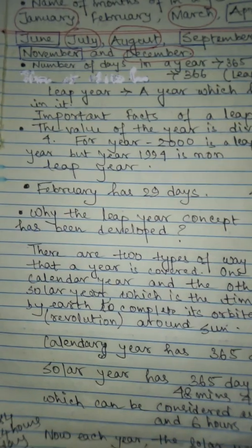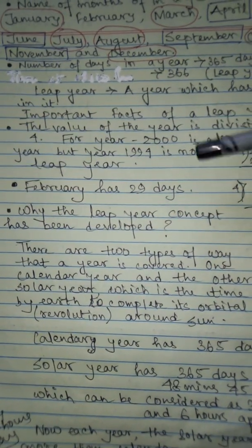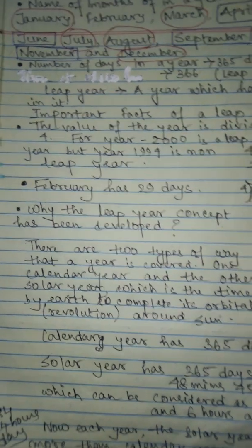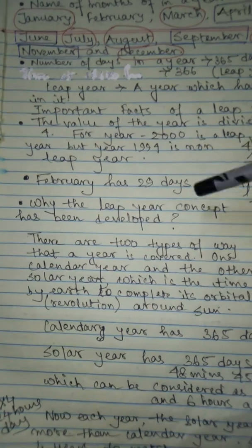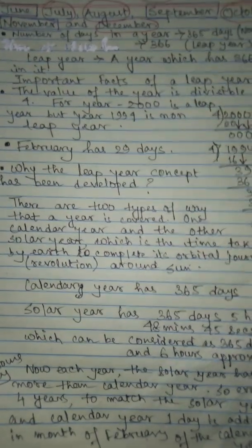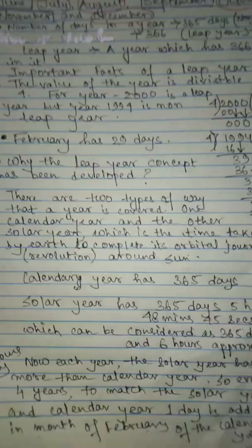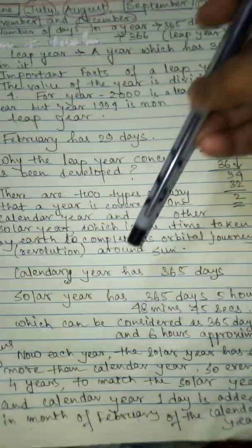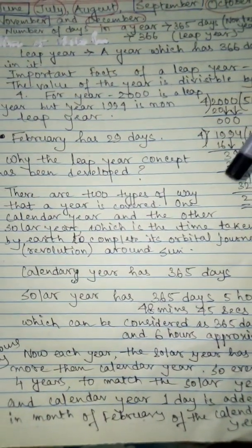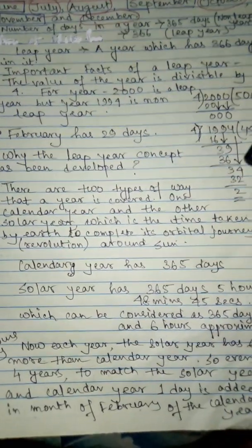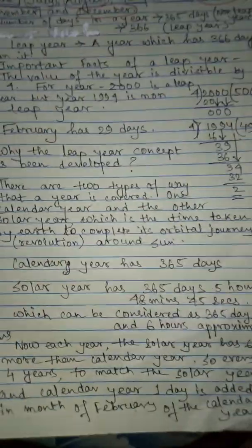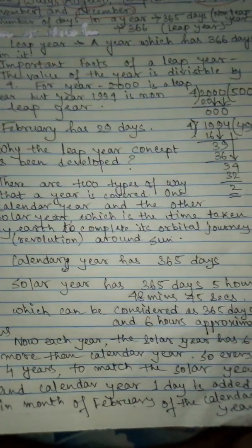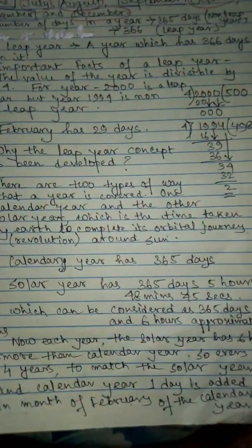Another important fact about a leap year is that the month of February has 29 days. Now we will find out why the leap year concept was developed. There are two types of year: the calendar year, used globally, and the solar year — the time taken by the Earth to complete one revolution around the sun.